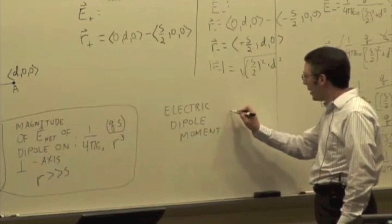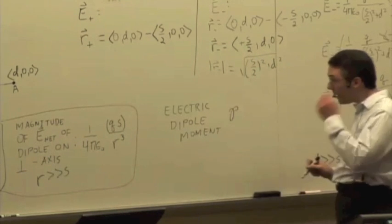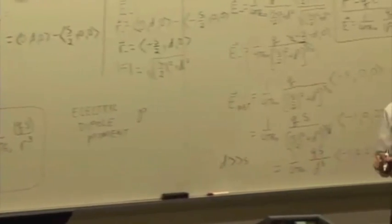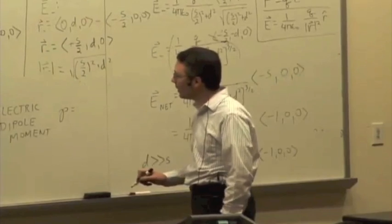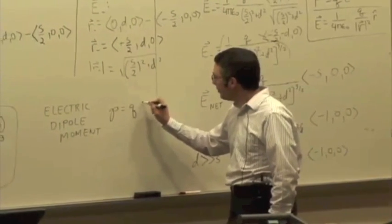And the symbol that's used is often lowercase p, which is a little unfortunate because it's the same symbol as momentum, but you have to live with it. p is equal to q times s.